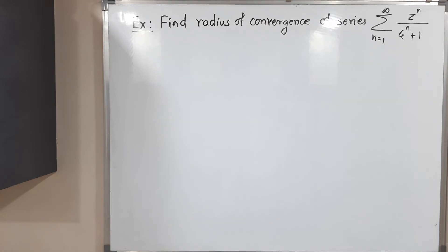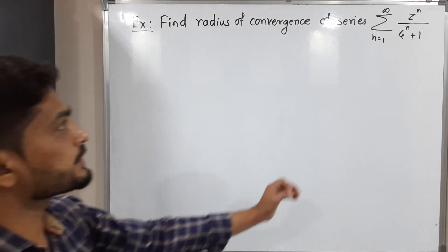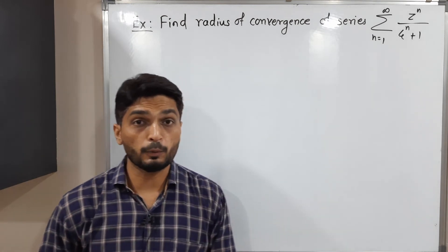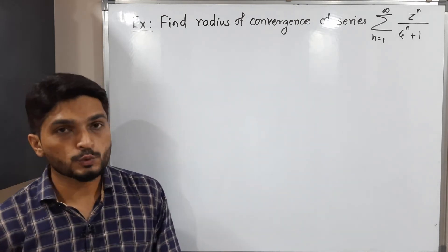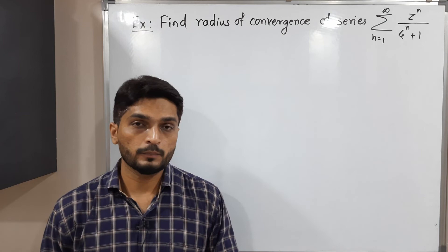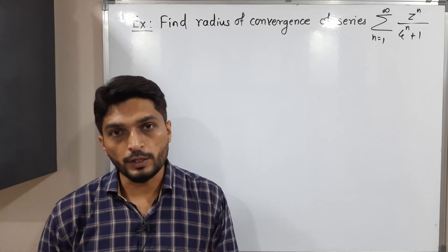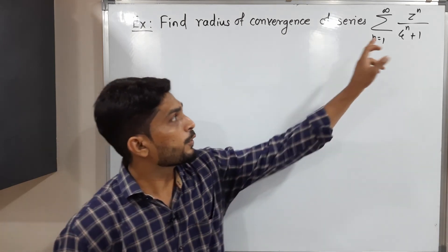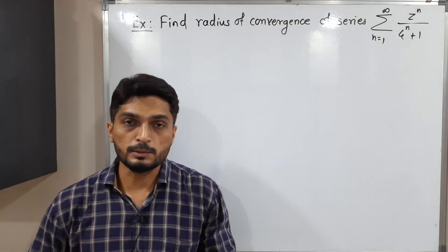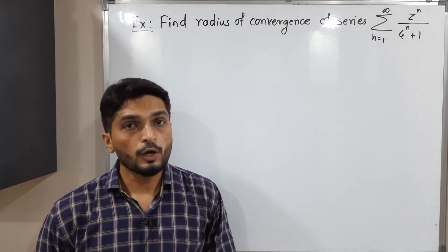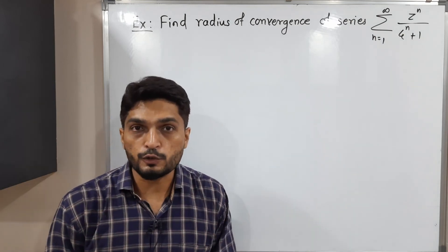This is the next example. We have to find radius of convergence of series summation z raised to n upon 4 raised to n plus 1. So what is a_n? a_n is the multiple of z raised to n, which is 1 upon 4 raised to n plus 1. Similarly we can find a_{n+1}, put those values in the formula of radius of convergence, and we can easily solve this problem.